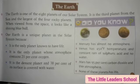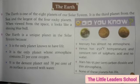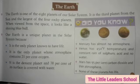बच्चो, the Earth is one of the eight planets of our solar system. जो हमारे solar system में eight planets होते हैं, उसमें पृथ्वी उनमें से एक है. It is the third planet from the sun — ये सूर्य से third number पर है. And the largest of the four rocky planets — rocky मिन्स होता है चट्टानी. जो चार चट्टानी planets हमारे होते हैं, उनमें से ये सबसे बड़ा है.